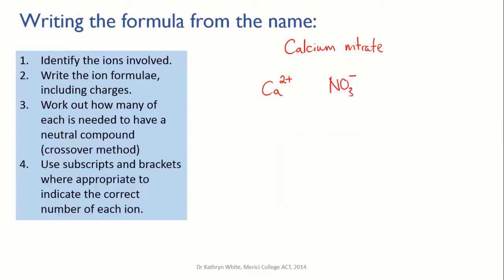Okay, if we do the crossover method for this, the two is going to come down near the nitrate, the one is going to come down near the calcium, which is going to give us a formula of one calcium and two nitrates.